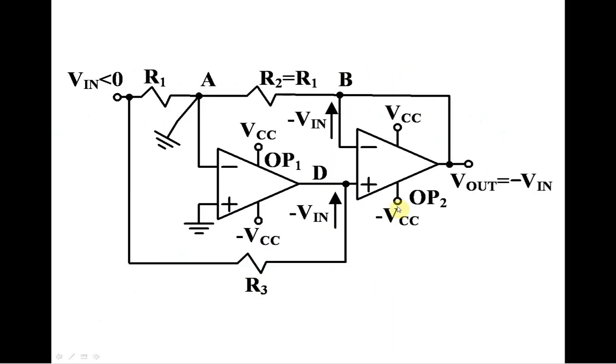So when input is negative, output is positive. Point A has a mine point and has a potential of 0V, same as non-inverting terminal of an Op-Amp 1. Op-Amp 1 operates in linear regime, meaning it is not saturated.